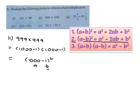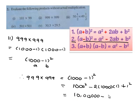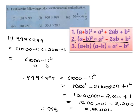Here, a = 1000 and b = 1. Therefore, 999 times 999 equals (1000 - 1)², which equals 1000² - 2(1000)(1) + 1² = 10,00,000 - 2000 + 1 = 9,98,001. Therefore, the product of 999 times 999 is equal to 9,98,001.